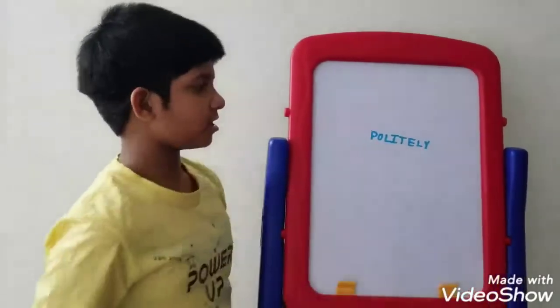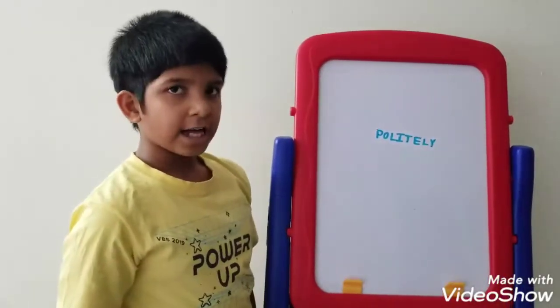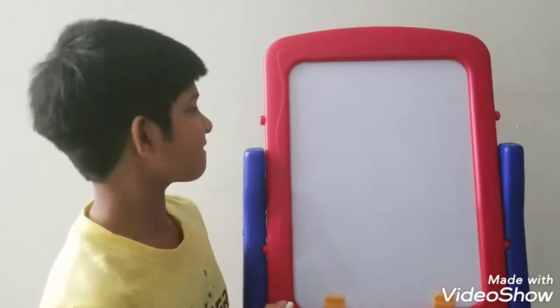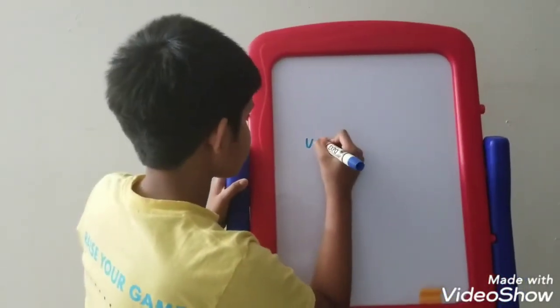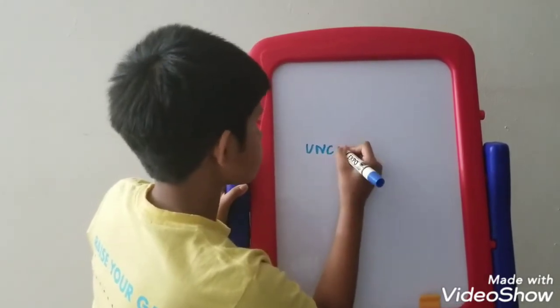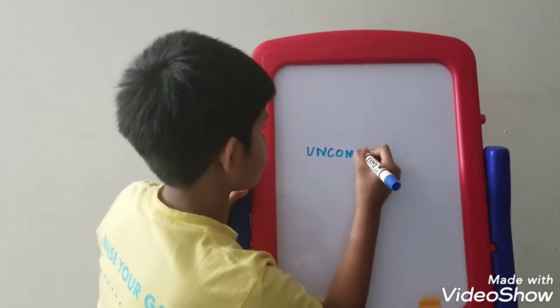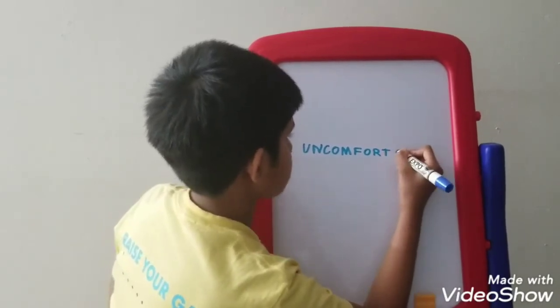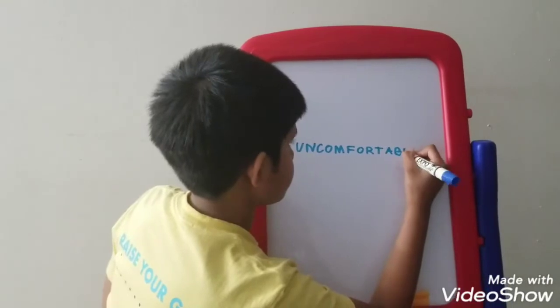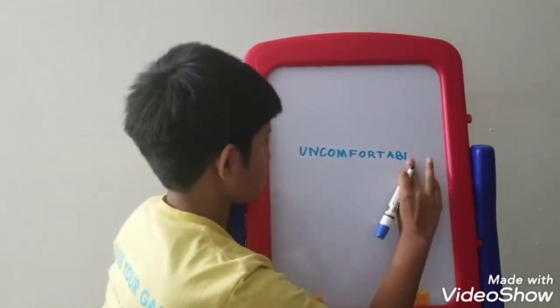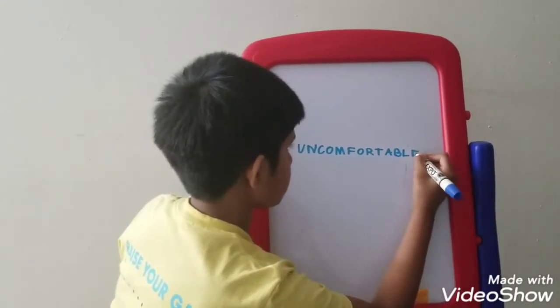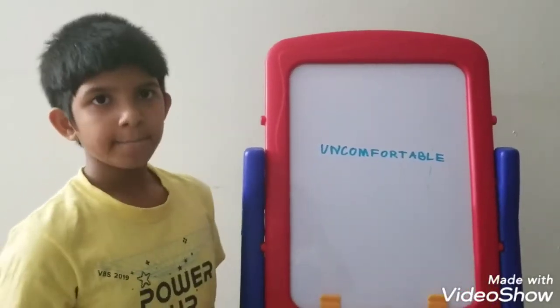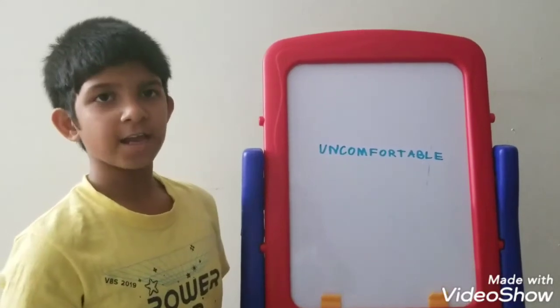Politely. To spell politely, it is P-O-L-I-T-E-L-Y. Uncomfortable. To spell uncomfortable, it is U-N-C-O-M-F-O-R-T-A-B-L-E.